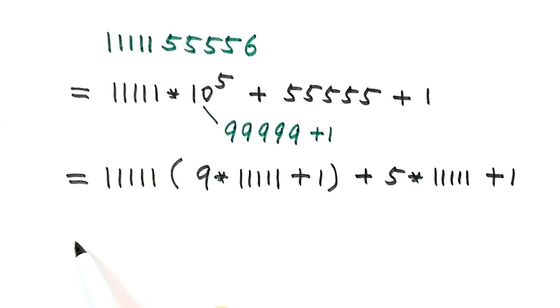So the first part is just x. Then here, nine times x plus one. Then here, five x plus one.